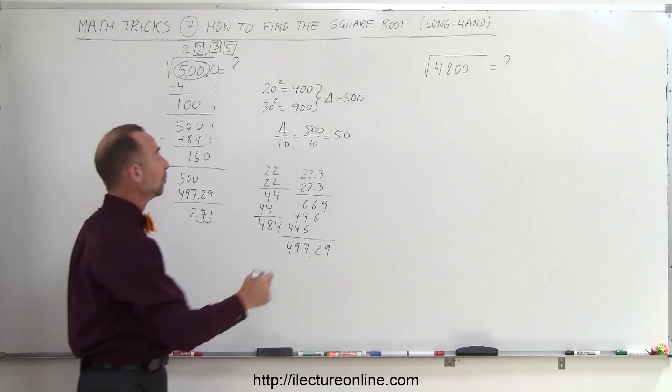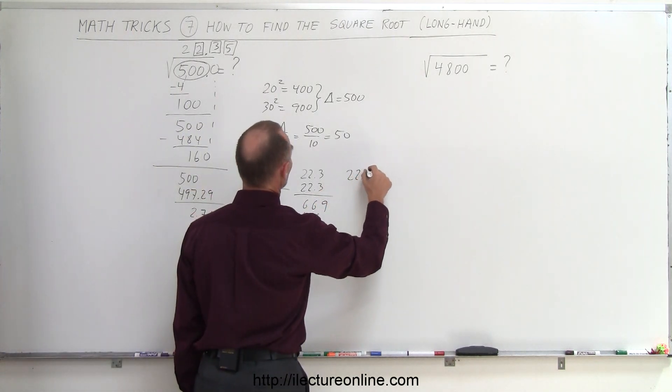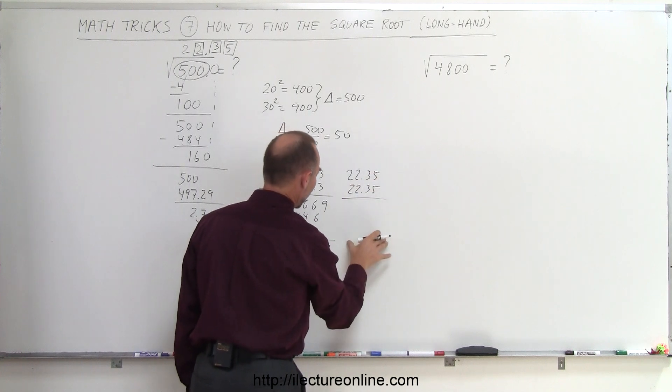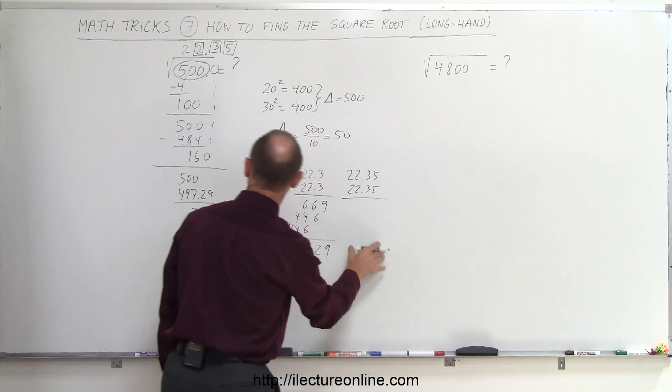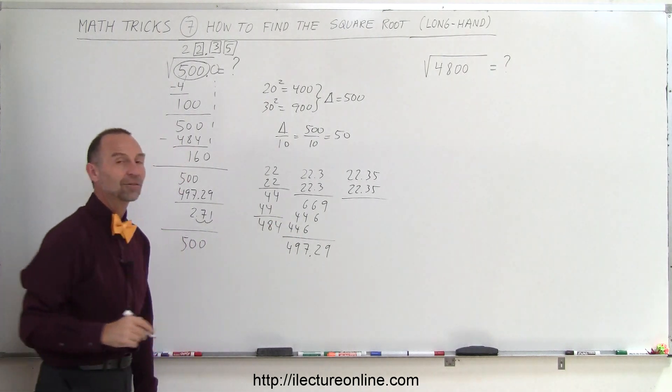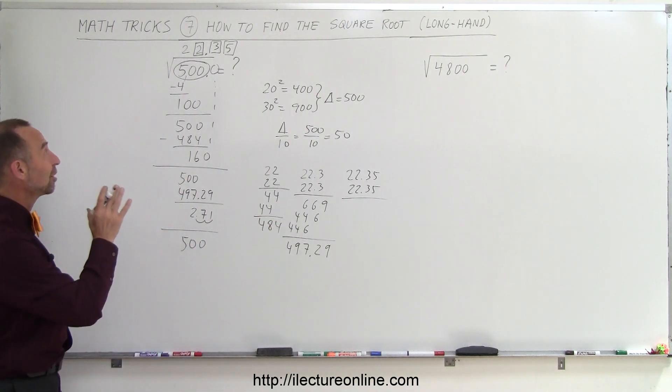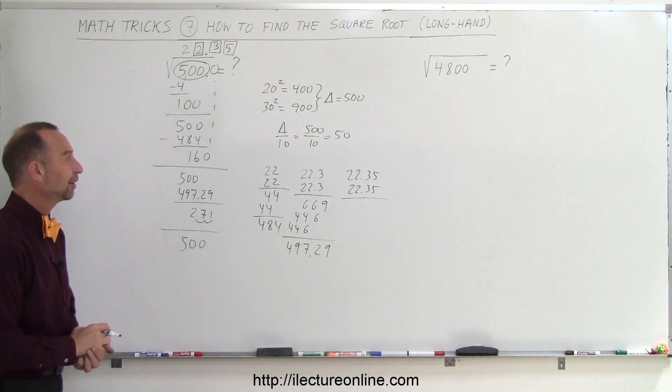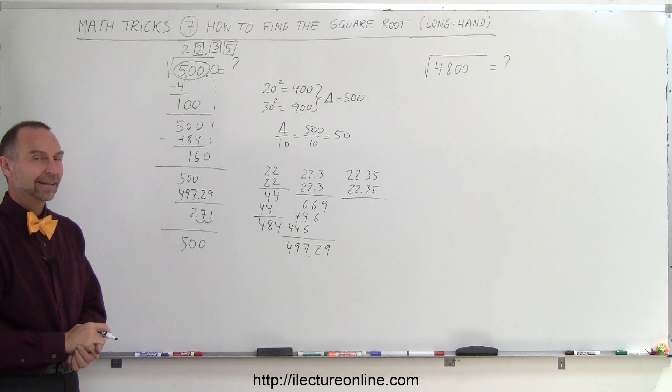And I can continue this. I can then multiply my 22.35 times 22.35, and if that number ends up to be less than 500, I do the same thing again. I take 500 minus that number, and I just continue the process like that. And you'll find that you get something very close to the actual value of the square root of 500.